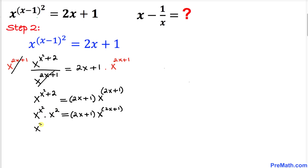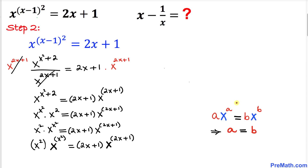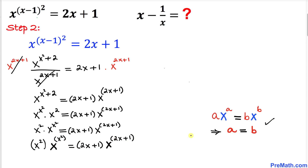I can write x squared first, then times x power (x squared), and the right hand side stays the same. Putting the exponent x squared in parentheses on both sides, we are going to use the rule that if a^(f(a)) = b^(f(b)) then a equals b. Here x squared and x squared is our a, and (2x plus 1) and (2x plus 1) is our b, so according to this rule x squared equals 2x plus 1.